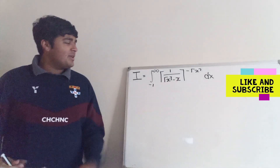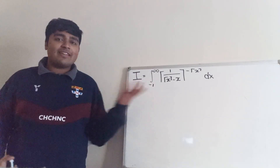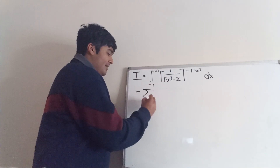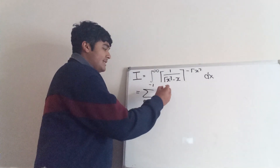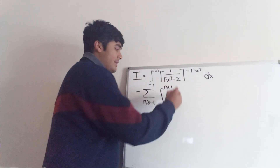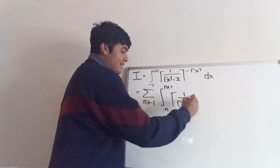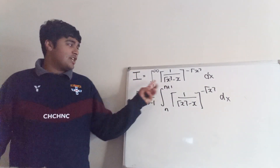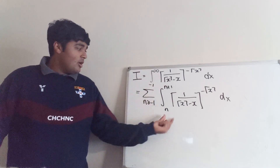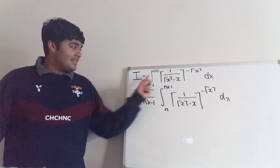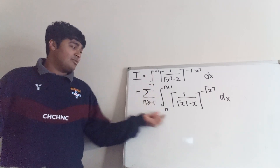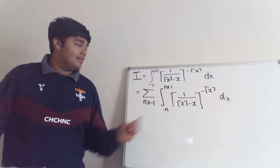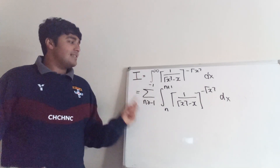A common trick for evaluating integrals where you've got a ceiling function or a floor function is to convert that integral into a summation of integrals. So this integral from minus 1 to infinity is going to become the sum from n equals minus 1 up to infinity of the integral from n to n plus 1. All I've changed is the minus 1 to infinity integral to an infinite sum of integrals from n to n plus 1. When I plug in n equals minus 1, I get minus 1 up to 0; when I plug in 0, I get 0 to 1; and so on. So if I add up all these integrals, I get the original integral.